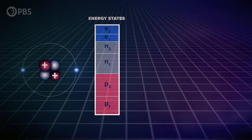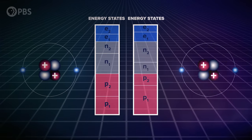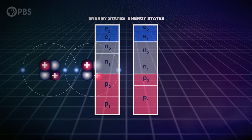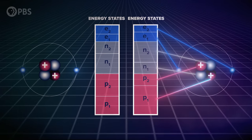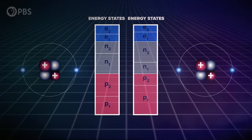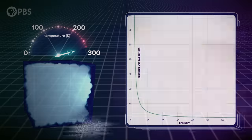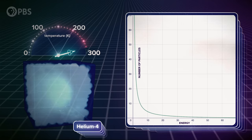That doesn't mean they overlap in physical or position space. Their internal fermions would resist that. But the atoms as a whole can occupy identical energy states. We really only see the effect of this at extremely low temperatures, so let's do an experiment and cool down some helium-4.